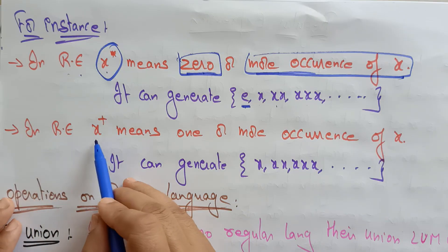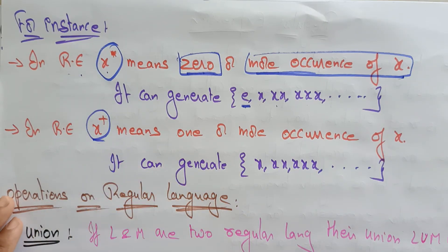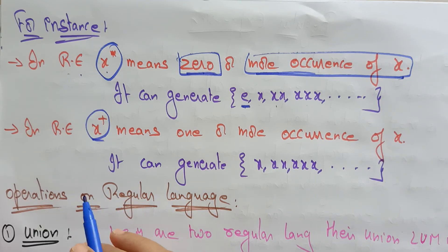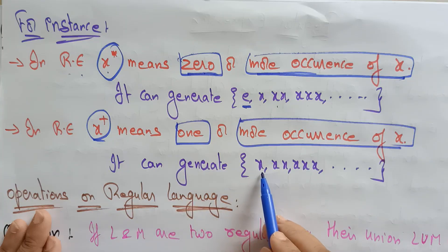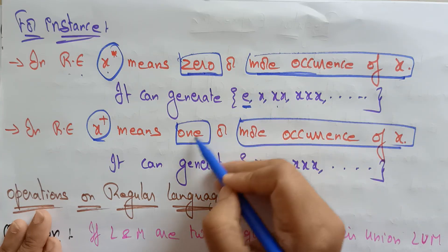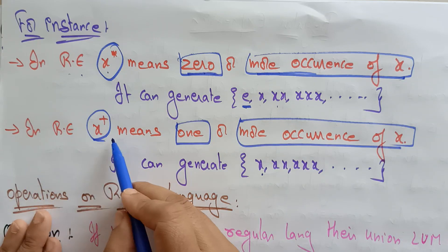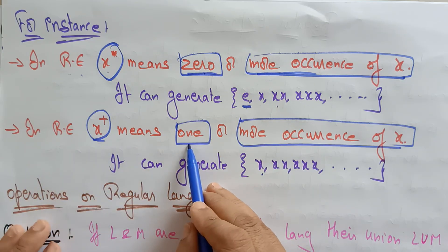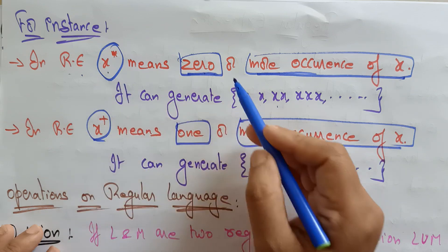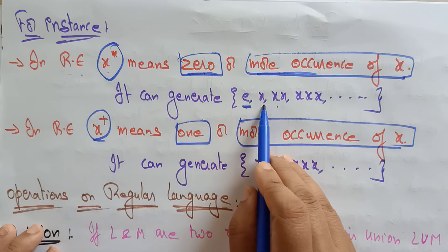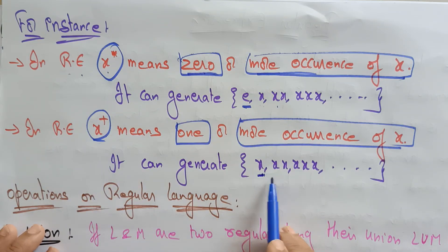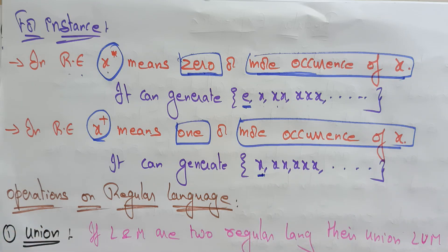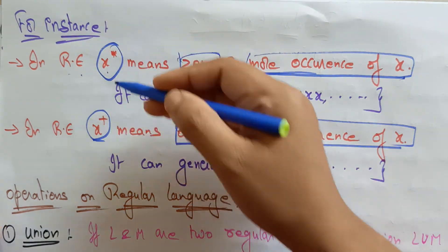If you see a regular expression with x+, this is the plus closure, which means one or more occurrences of x. X+ does not take zero — it starts with one. So you start with x and do not include epsilon, which indicates zero occurrences. This is how you can represent regular expressions.